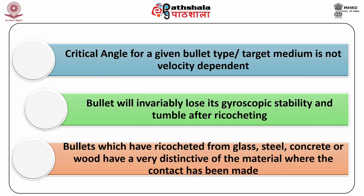Bullets which have ricocheted from glass, steel, concrete, or wood have a very distinctive marking of the material where contact has been made. The contact point will often have wood, fibre, or concrete adhering to it for easy identification. If the material was glass or polished steel, the mirror-like surface is quite distinctive. This is not, however, the case with a bullet which has ricocheted from water — even with hollow point bullets, it is difficult to differentiate between a bullet which has ricocheted from water and one which has not.